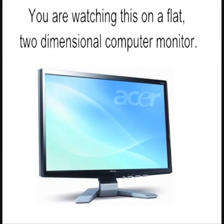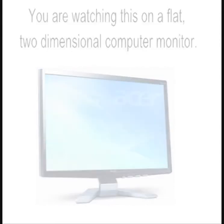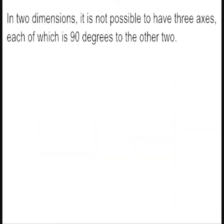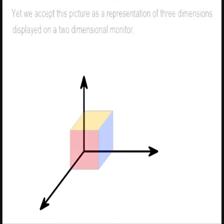You are watching this on a flat, two-dimensional computer monitor. In two dimensions, it is not possible to have three axes, each of which is 90 degrees to the other two. Yet we accept this picture as a representation of three dimensions, displayed on a two-dimensional monitor.